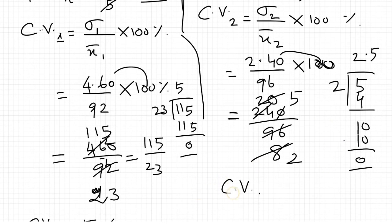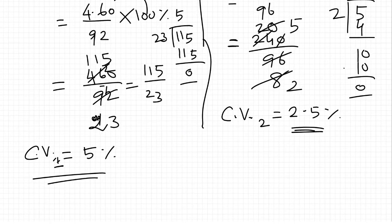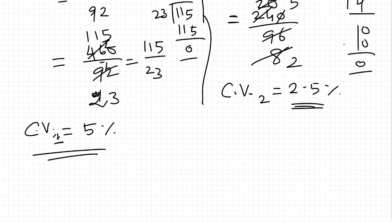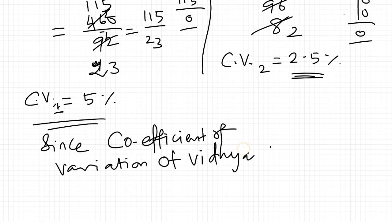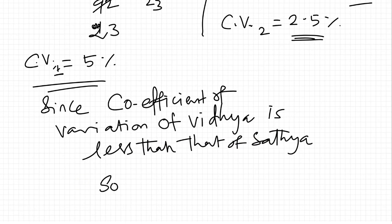So coefficient of variation CV2 equal to 2.5%. Whose coefficient of variation is lower, their consistency is higher. Since coefficient of variation of Vidya is less than that of Sathya, Vidya is more consistent than Sathya.